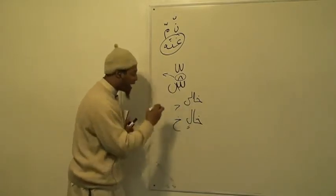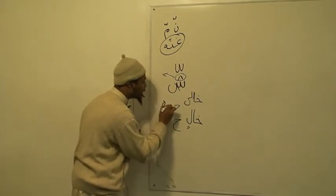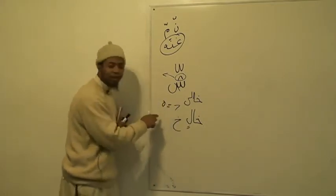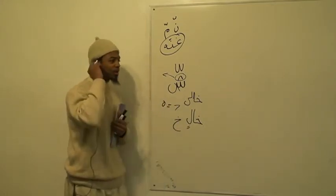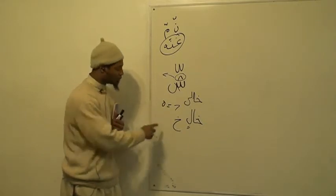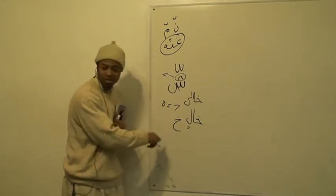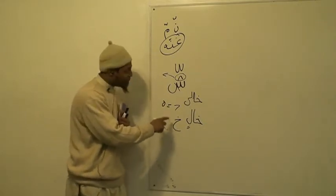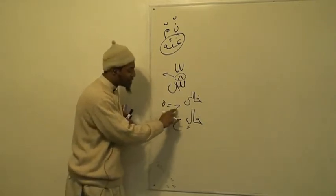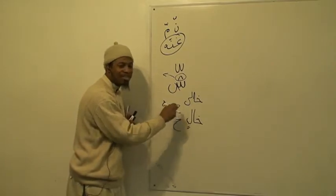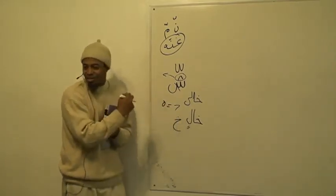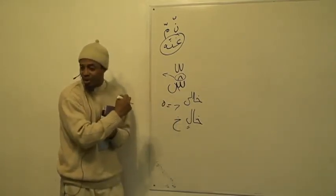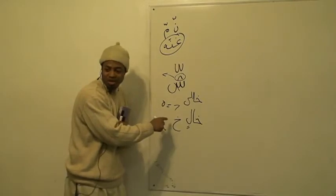And when you write freehand, it's written like this — just a regular circle. The reason people write it as a circle as opposed to a khaw is because they don't really know what it is, number one, and it's easier to write with the circle. But now you know what it is.